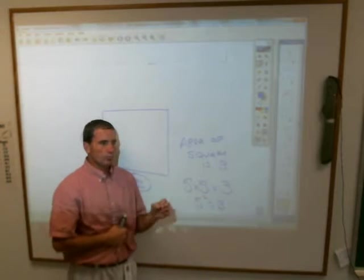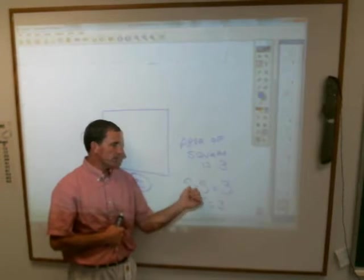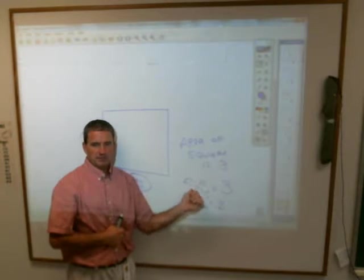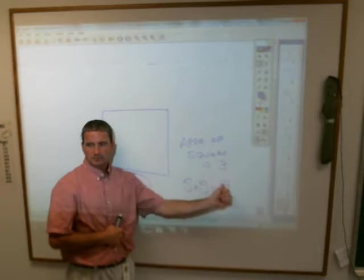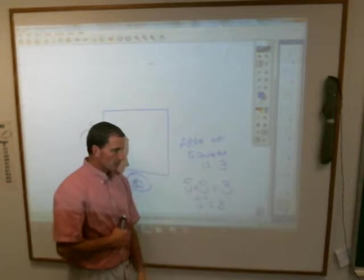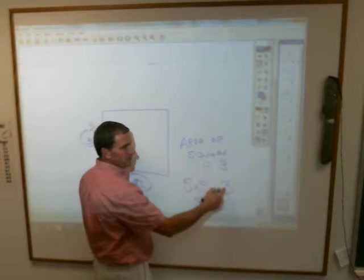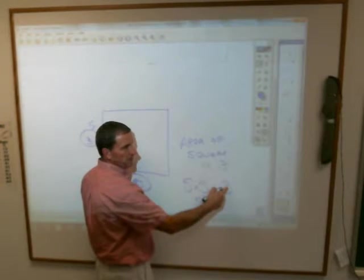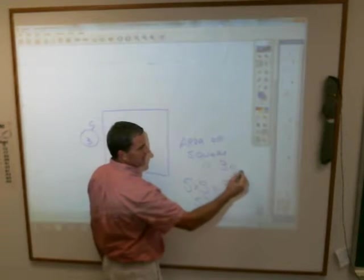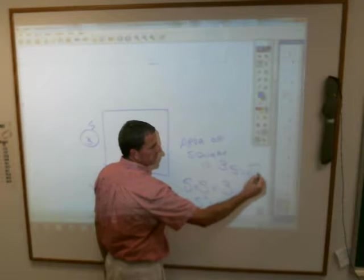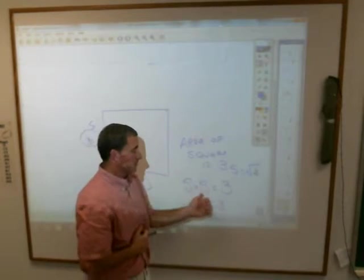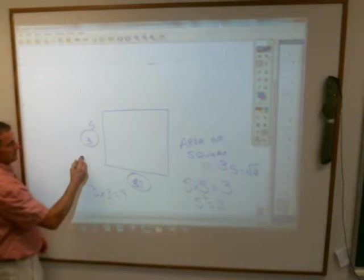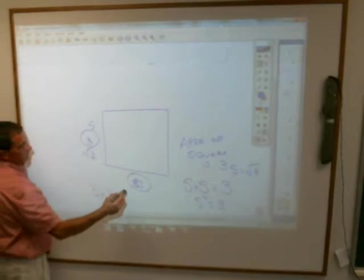What thing did we just talk about that said what number times itself gives you this? What mathematical thing did we just talk about? Kate? Square root. Square root. So I want to know what, in order to get this to equal 3, I know that S has to be the square root of 3, because that's what this asks me, what same number times what gives me 3.